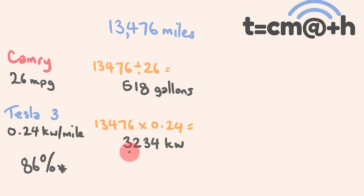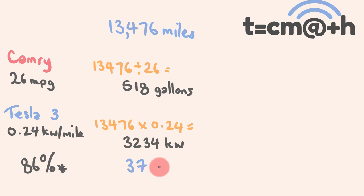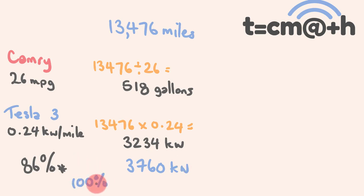So if we turn this into the full 100% amount of electricity you would use, we divide by 86 and times by 100. Doing that, we get that we would actually be using 3,760 kilowatts. This is the actual 100% amount, and I'm going to use both figures because I think it's important to recognise that.